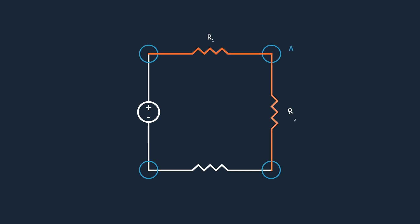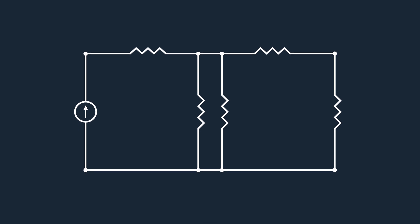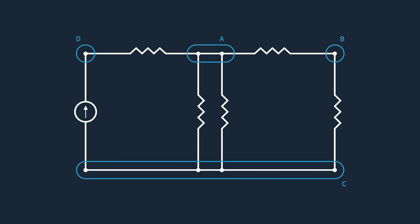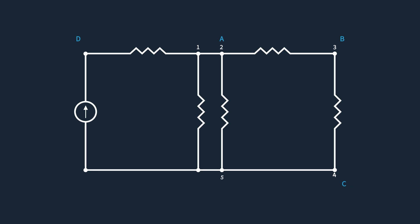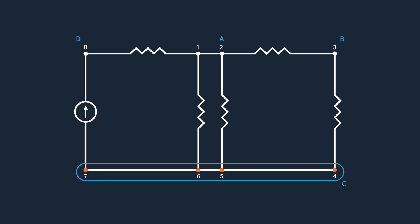In this circuit there are four nodes: Node A links resistor 1 and resistor 2; Node B connects resistor 2 and resistor 3; Node C joins the voltage source and resistor 3; while Node D connects resistor 1 and the voltage source. Any points in a circuit connected by perfect conductors will be at the same voltage and are part of the same node. For example, a more complicated circuit may appear to have eight junctions, but points 1 and 2 have no circuit elements between them — making them electrically identical and therefore one node. Similarly, points 4, 5, 6, and 7 have no circuit elements in between, share the same voltage potential, and are considered one node.